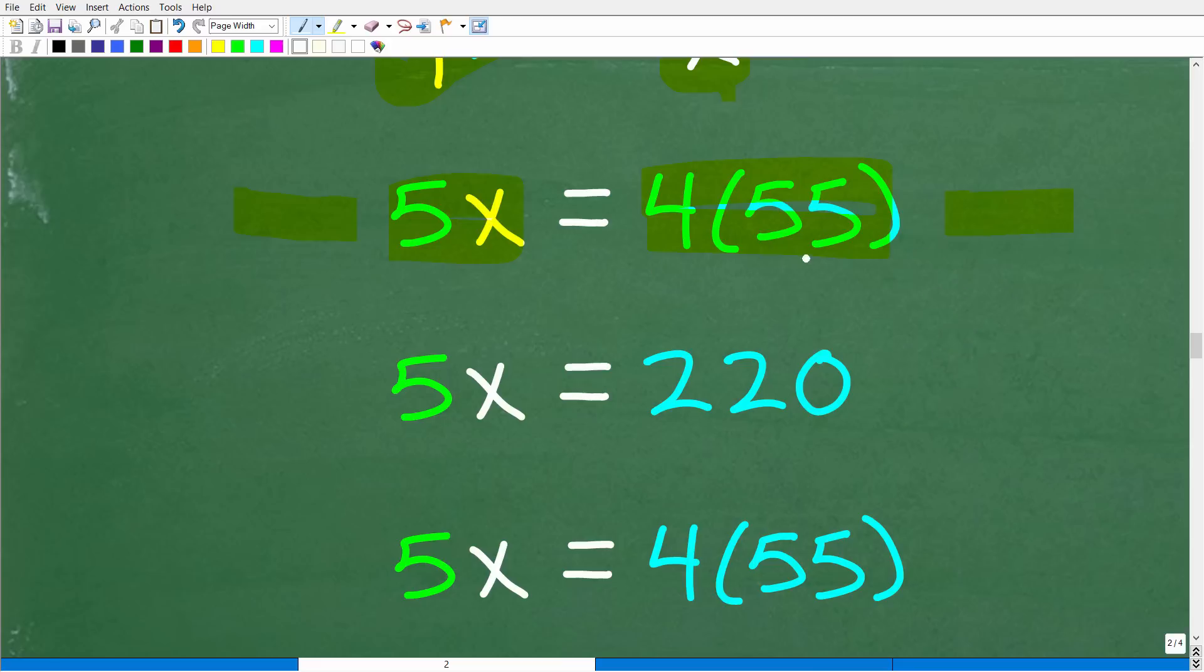Well, not so fast, okay? When you're dealing with equations and whatnot, or just in mathematics in general, before you multiply products and things, hold off because there might be a nice opportunity to simplify. In other words, I may not have to do this multiplication problem as it is, okay? Well, you might be saying, well, what are you talking about? Well, I'm going to show you that right now. Okay, so instead of multiplying and getting four times 55 is 220, let's just keep the problem this way. Five X is equal to four times 55.